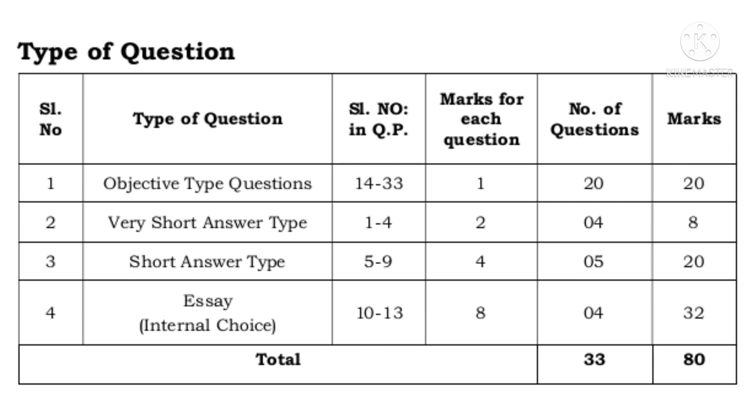Number 3, short answer type questions are from question number 5 to 9. Each carries 4 marks, there are 5 questions, so 5 into 4 is 20 marks.